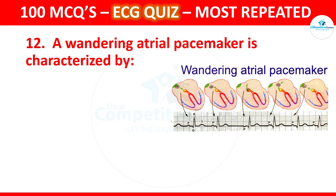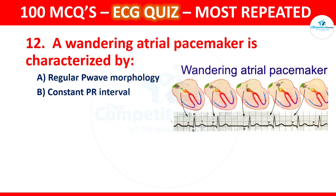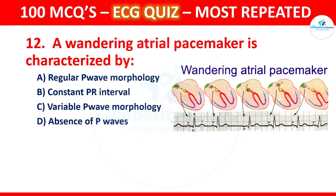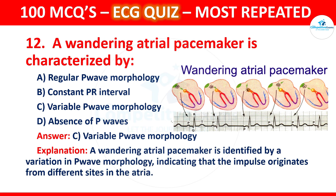Question 12: A wandering atrial pacemaker is characterized by which of the following? Options are regular P wave morphology, constant PR interval, variable P wave morphology, or absence of P waves. The correct answer is variable P wave morphology. A wandering atrial pacemaker is identified by variation in P wave morphology, indicating that the impulse originates from different sites in the atria.